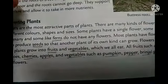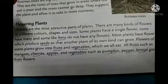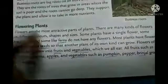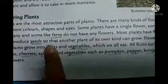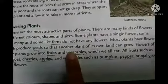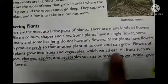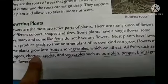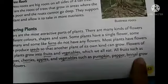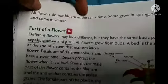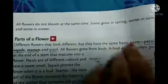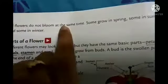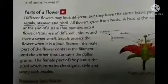Flowers also help to produce seeds. Flowers of some plants can grow into fruits and vegetables — like brinjal and chilies, you will first see the flower and then the fruit. All fruits such as mangoes, cherries, apples, and vegetables like pumpkin, pepper, and brinjal all grow from flowers. Flowers do not bloom at the same time — some bloom in spring, some in summer, and some in winter.